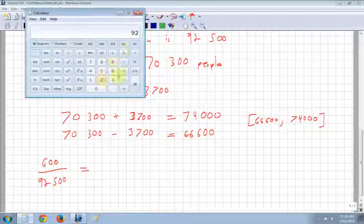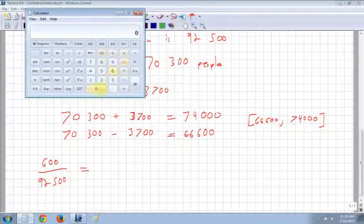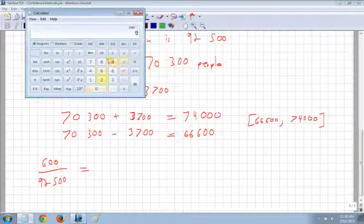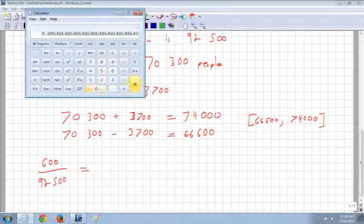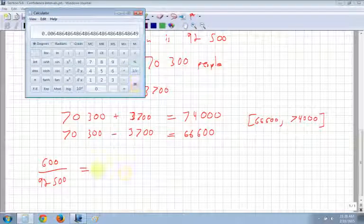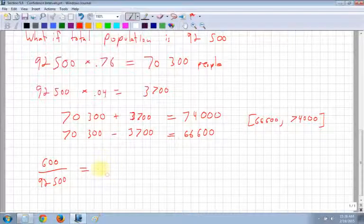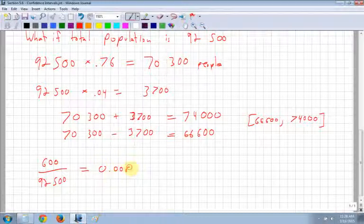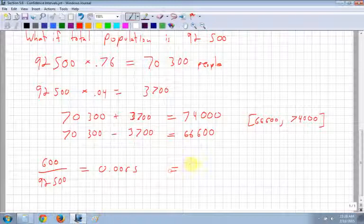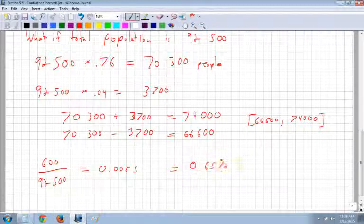You have 600 people divided by 92,500. So we're taking 0.0065. Even if I move my decimal place two places, that's 0.65% of my total population.